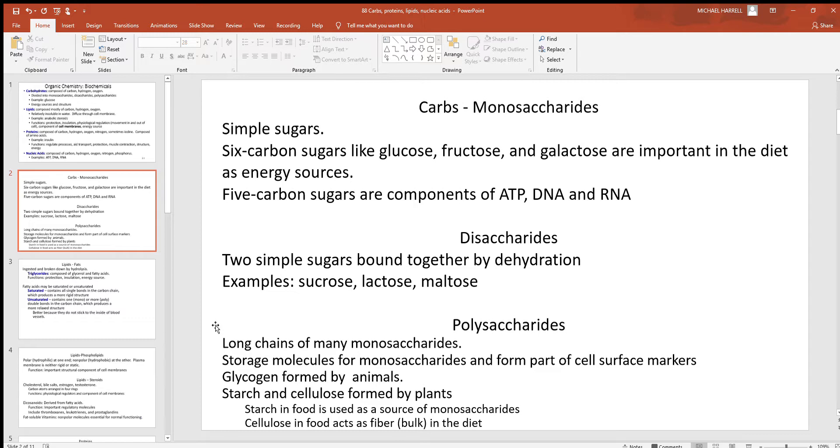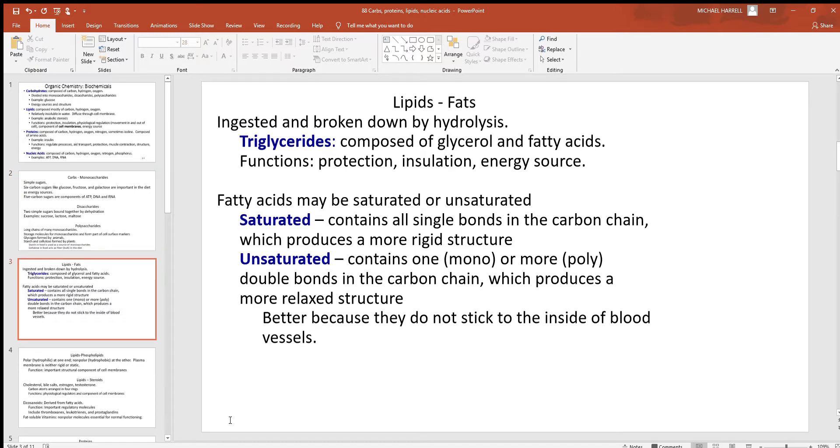Lastly, we see polysaccharides. Again, these are many of the simple sugars chemically combined together. These are largely used as storage molecules. Glycogen's a great example, it's a big energy storage molecule. Right after fats and lipids, glycogen's the next best energy storage molecule in our body. A lot of that's found in your liver. Starch we see in food, often used as a source of monosaccharides, and cellulose. See a lot of that in cell walls in plants.